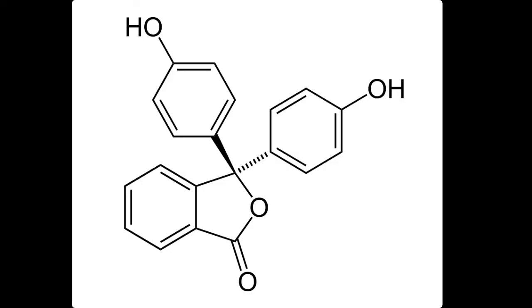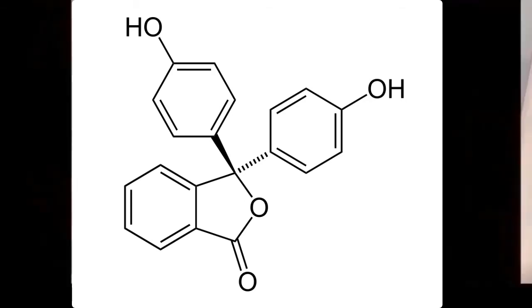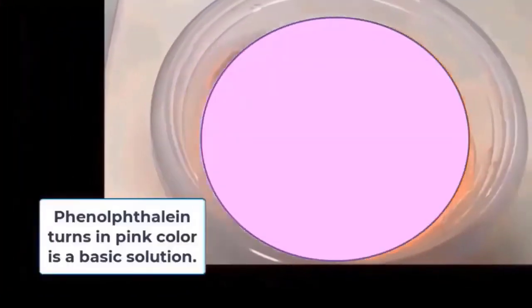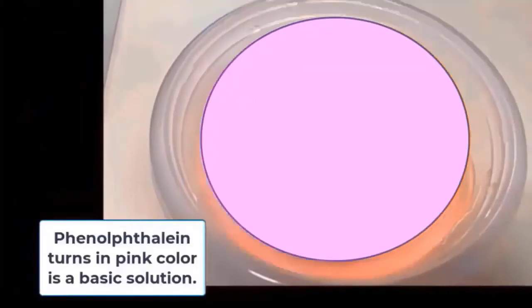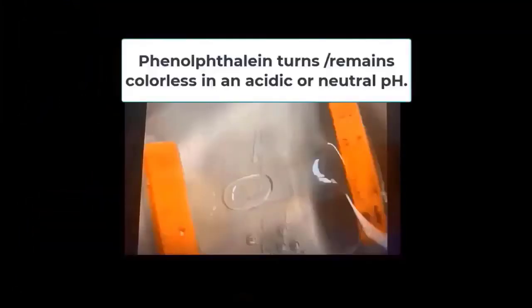Now phenolphthalein is a pH indicator and it turns pink in a basic solution and colorless in an acidic or neutral pH. In the beginning, as you see here, inside of the bag was colorless and filled with water and phenolphthalein.